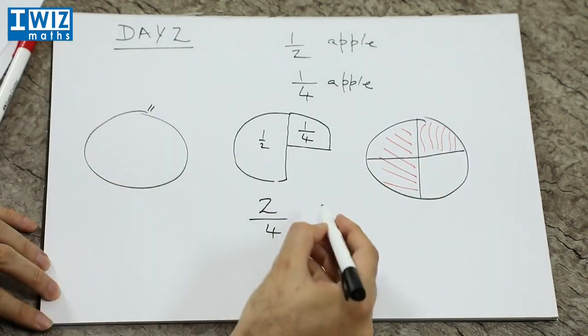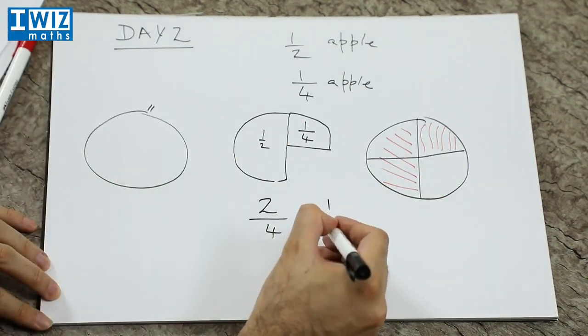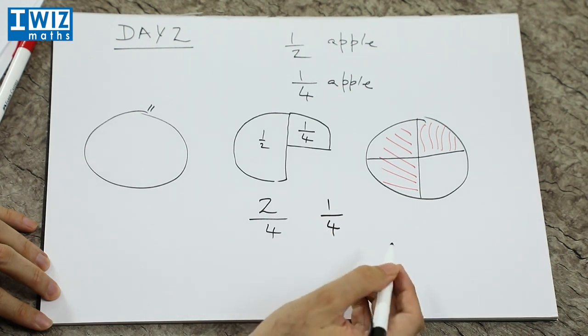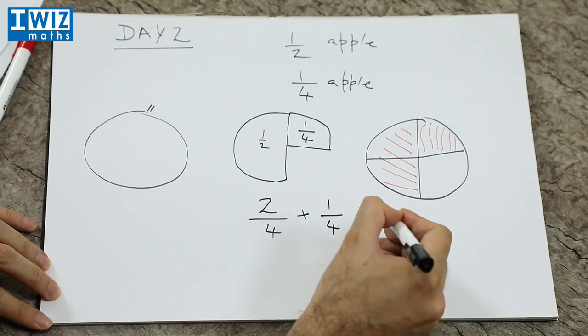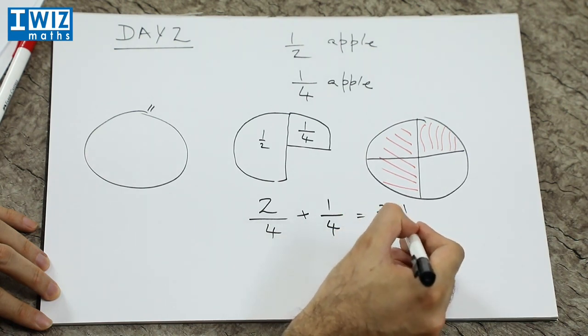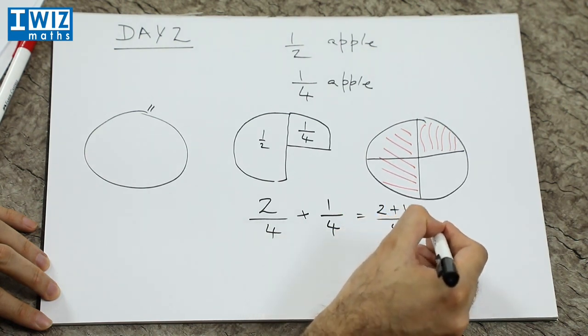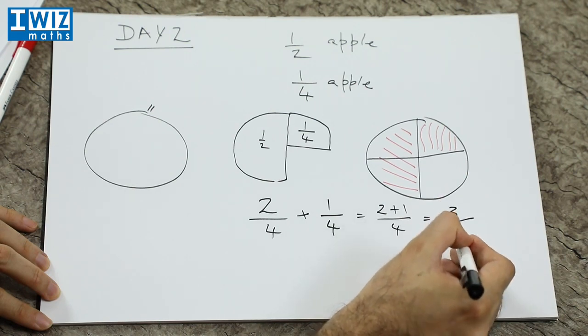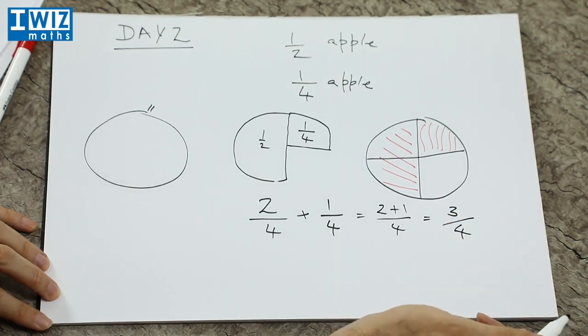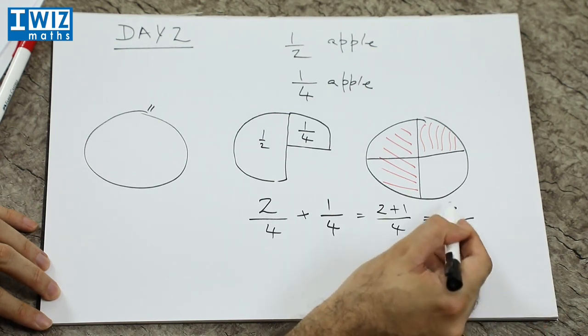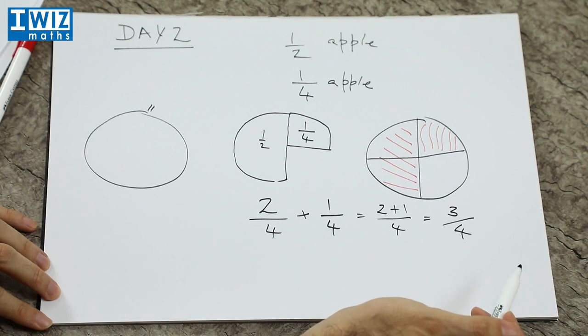What we do is we had one of the four pieces after lunch, and then we add them up. So that gives us two plus one divided by four, which is just simply three divided by four. So essentially we have had three-fourths of the apple within the day, half before lunch and a quarter after lunch.